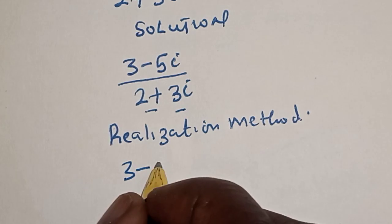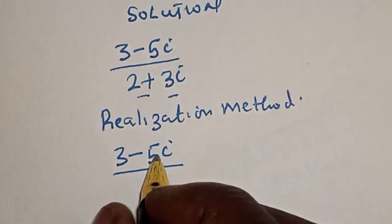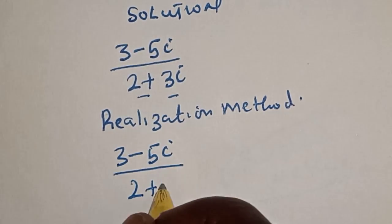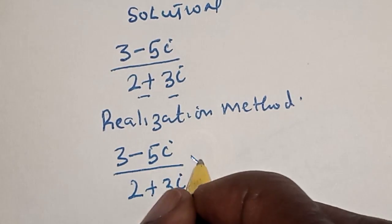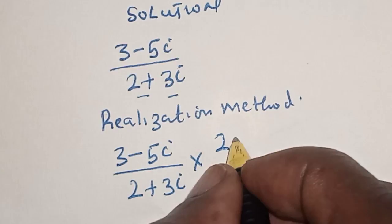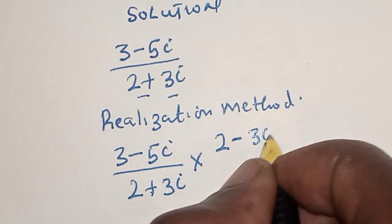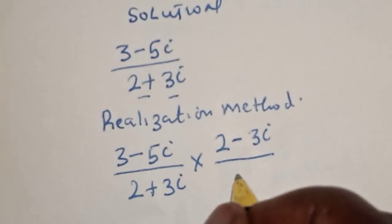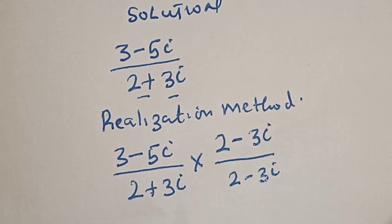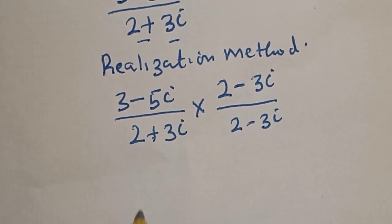So, 3 minus 5i over 2 plus 3i multiplied by the conjugate is 2 minus 3i over 2 minus 3i. Then, this is 3 minus 5i multiplied by 2 minus 3i divided by 2 plus 3i multiplied by 2 minus 3i.